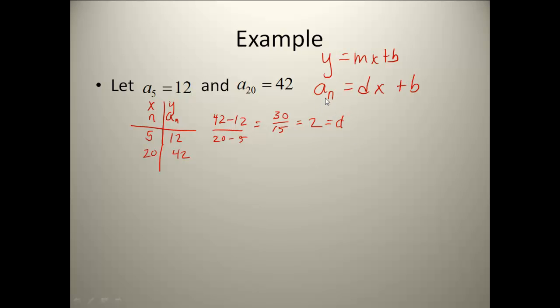Now I'm going to plug it back in here. I'm going to pick one of these terms, the 5 and the 12, and plug them in for my values. So my a sub n would be 12 equals 2 times my 5. That should be an n in this formula. Plus b. Solve that out, and you get b is also equal to 2.